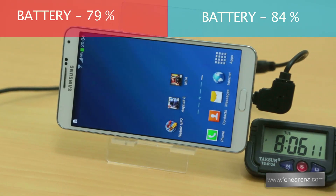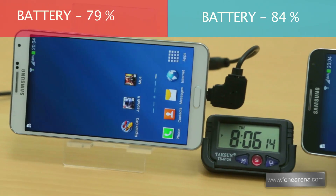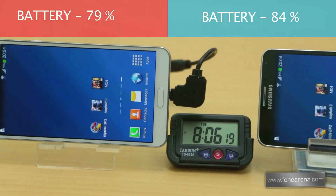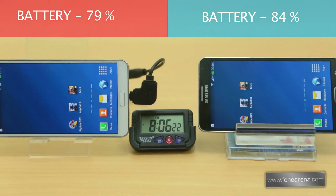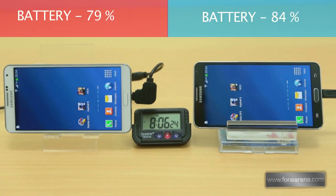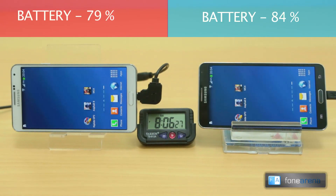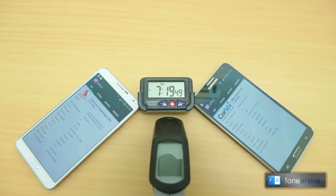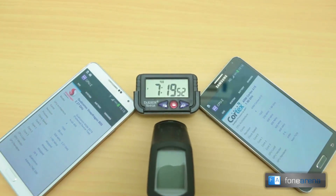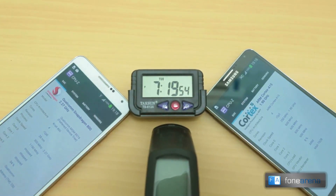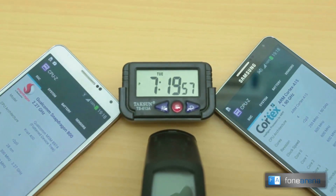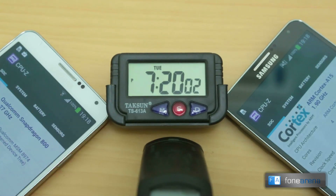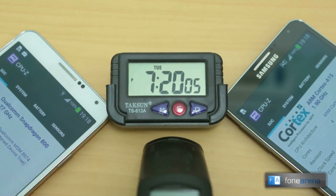So there you go folks — that's an objective look at both these variants. You've seen three games, three different performances, and three different ways that both chips handle the phone. Both are top-notch chips offering great performance, but the key takeaways are more heat on the Exynos version and worse battery life on the Snapdragon 800 version, both owing to their architectural differences and base clock frequencies. Let us know what you think in the comments below, hit the like button, and subscribe to our channel for more videos like these. Thanks for watching.